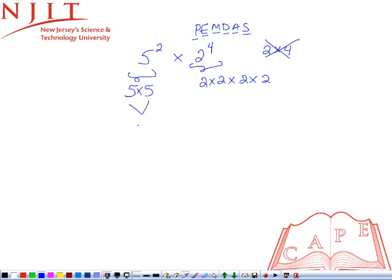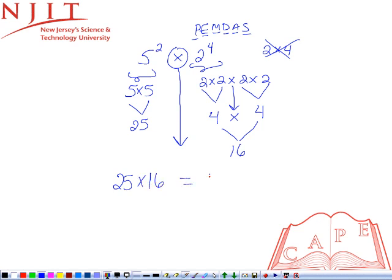5 times 5 will give you 25. 2 to the 4th power, you could split it up twice. You could say 2 times 2 and then you could say again 2 times 2. So 2 times 2 gives you 4. 2 times 2 gives you 4. And you have to bring down the multiplication. So 4 times 4 gives you 16. Do not forget the original problem, the multiplication. You have to bring it down. So you do 25 times 16 and that gives you 400. And that's your answer.